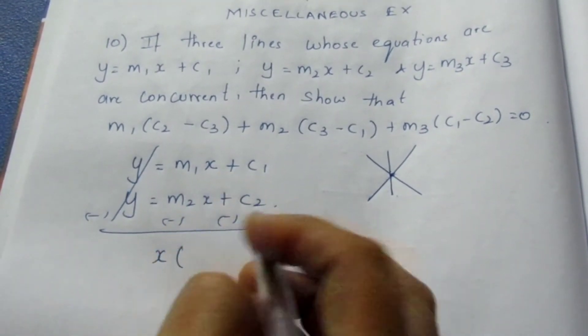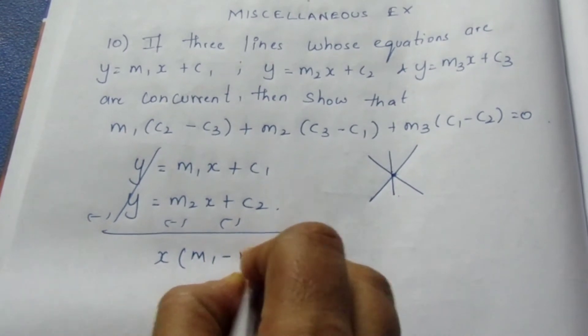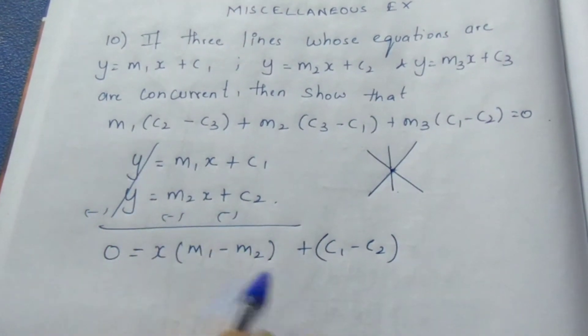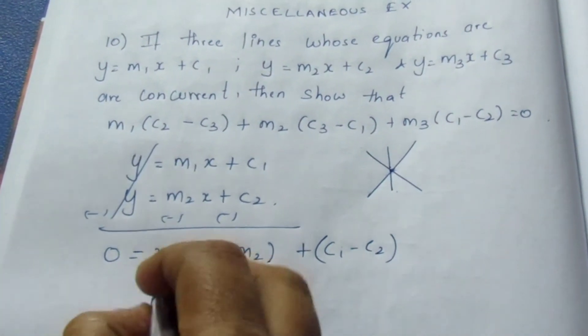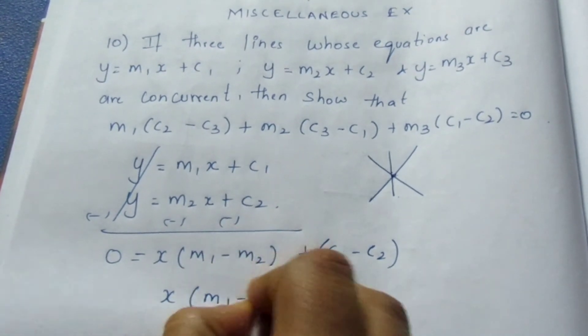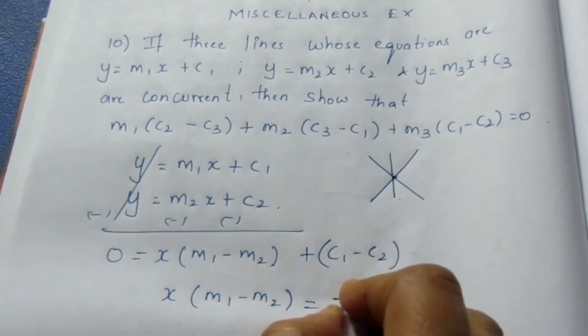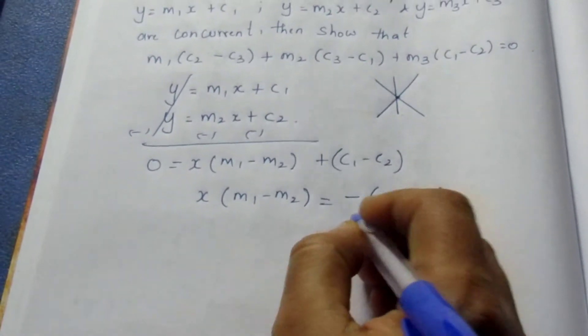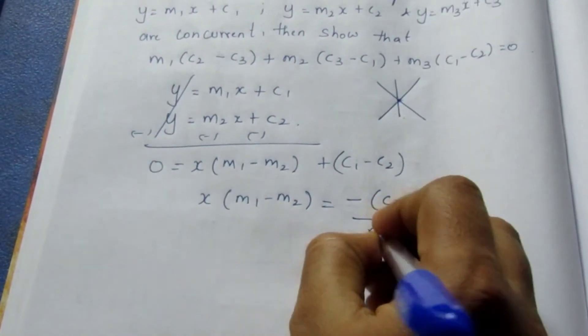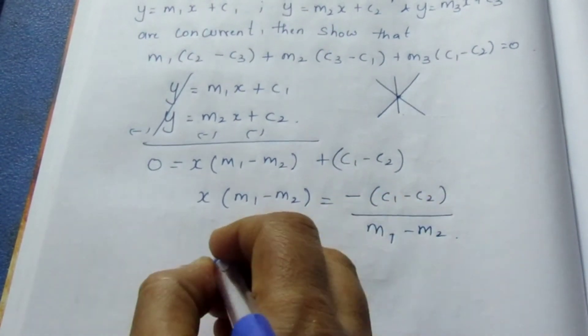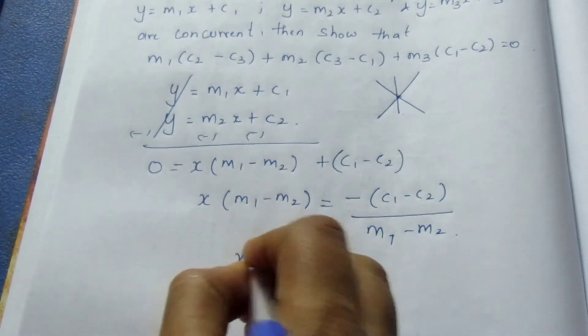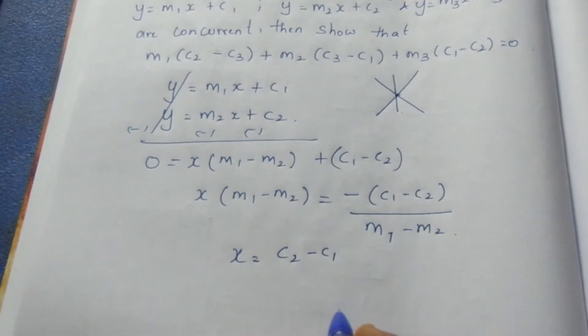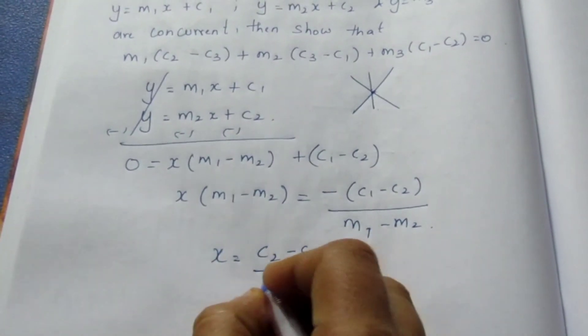Now taking x common, here it comes as (m₁ - m₂)x + (c₁ - c₂) = 0. Bringing c₁ - c₂ to this side, (m₁ - m₂)x = -(c₁ - c₂). This is in multiply, so it comes as divide. So x = (c₂ - c₁)/(m₁ - m₂).